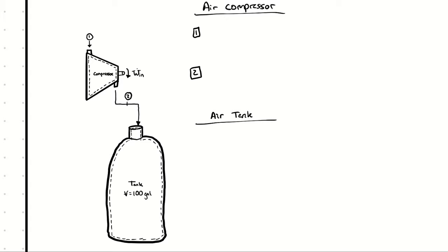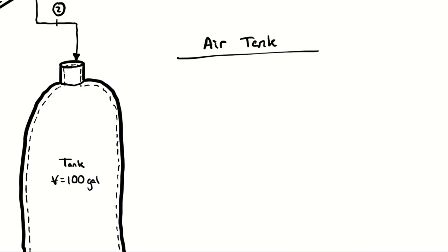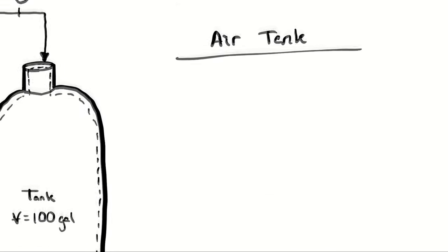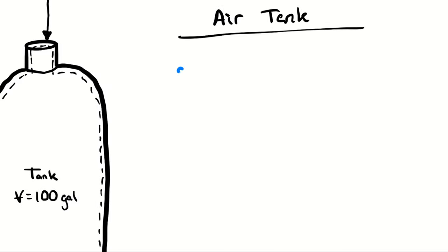On the tank itself, I'm considering a transient analysis — how long does it take to fill with compressed air until it reaches 600 kilopascals and 42 degrees Celsius? I need to establish two different state points in time, both referring to the air in the tank at different moments: one at the beginning and one at the end. I'll call them alpha and beta to reduce confusion.